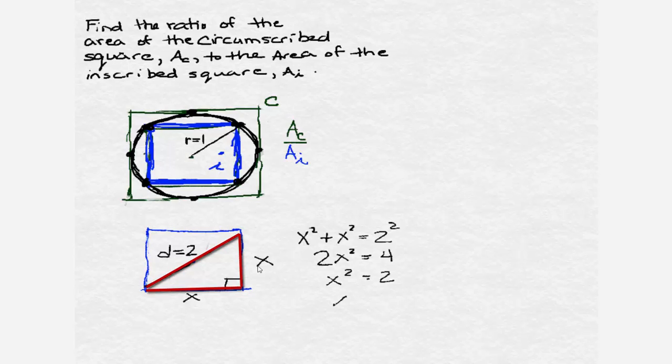This means that x squared has to be two, or in other words, x is either the positive or negative square root of two, but in this case we're talking about a length, so it would be the square root of two. Now what we're interested in is the area, but we just found the dimensions. Since each side of the inscribed square has a length of square root of two, the area is square root of two times square root of two, which is two. So now we have the area of the inscribed square.